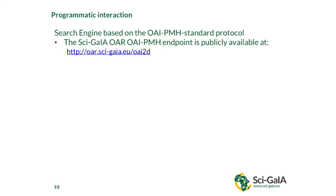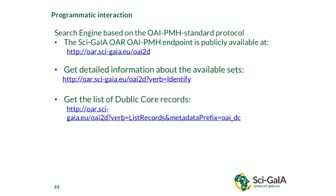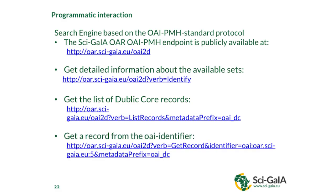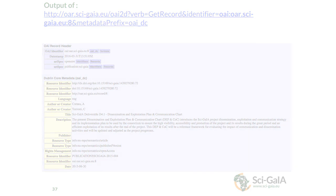Another way to interact with the CyGaia repository is using the search engine based on the OAI-PMH standard protocol. CyGaia is publicly available at the endpoint shown. You can use this endpoint to get detailed information about the available sets of the repository, and list all records in the Dublin Core format using this request. If you have an OAI identifier, you can retrieve all information of a record using this request. This is an example output where the system shows you all the Dublin Core metadata of the resource with the given OAI identifier. Thank you very much.